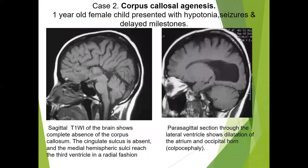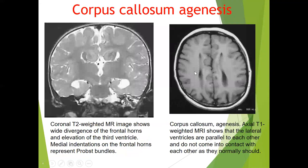The second case was of corpus callosal agenesis. A one-year-old female child presented with hypotonia, seizure, and delayed milestones. On T1-weighted sagittal images, there is complete absence of the corpus callosum. The cingulate sulcus is absent and the medial hemispheric sulci reach the third ventricle in a radial fashion. On the parasagittal section through the lateral ventricle, there is dilatation of the atrium and occipital horn, suggestive of colpocephaly.